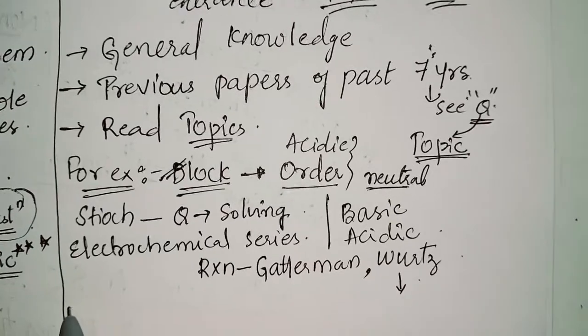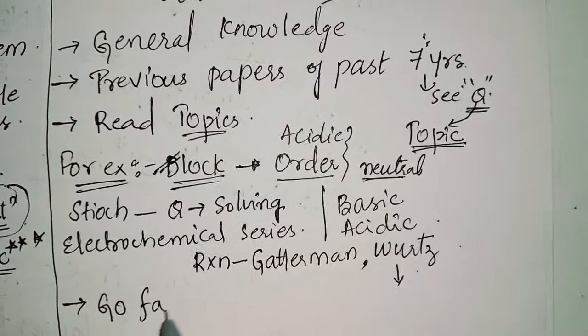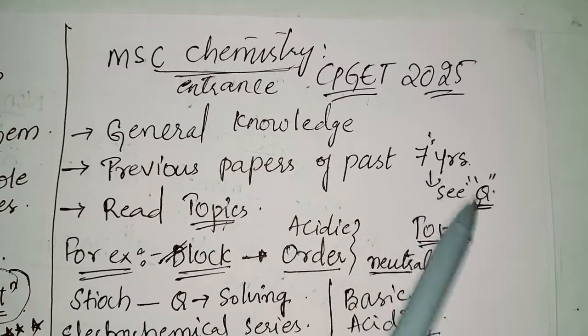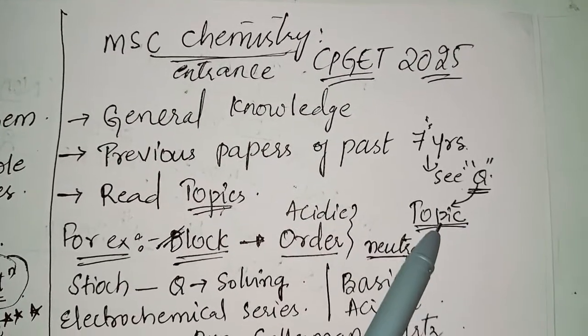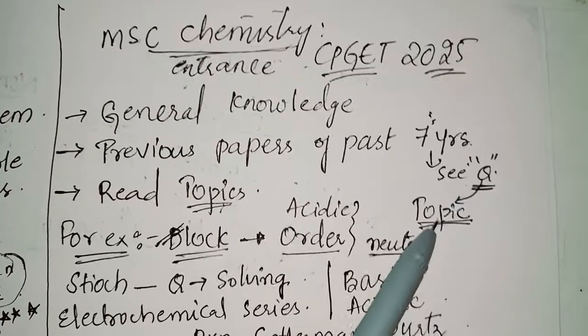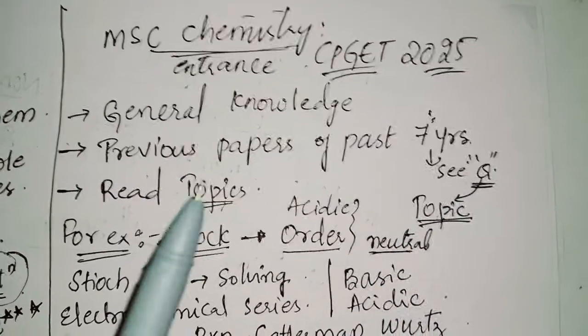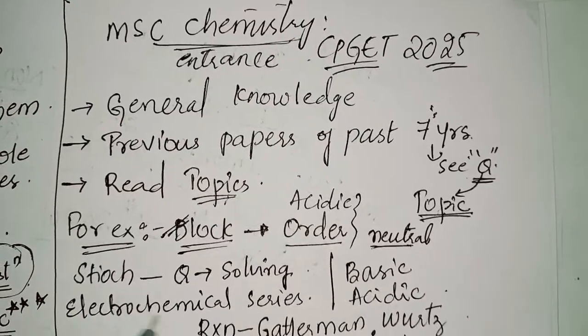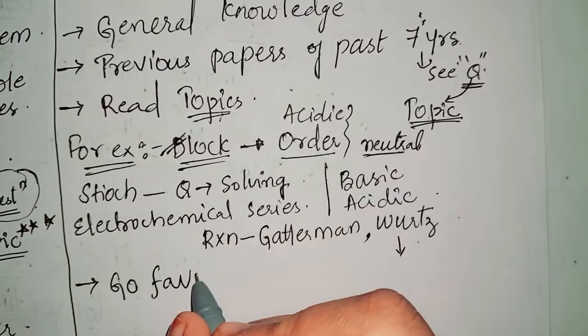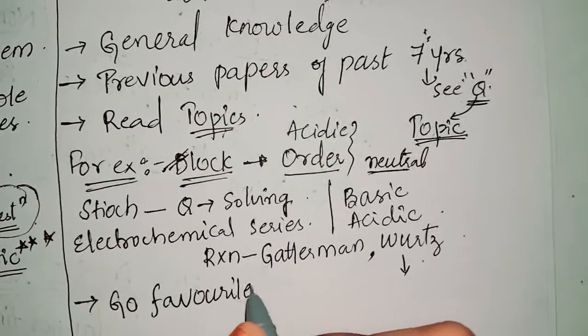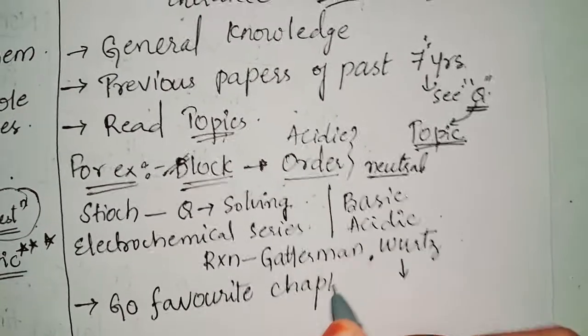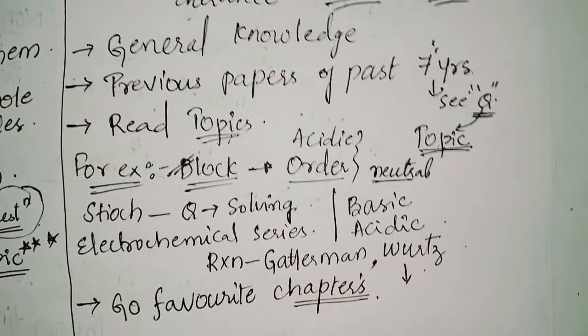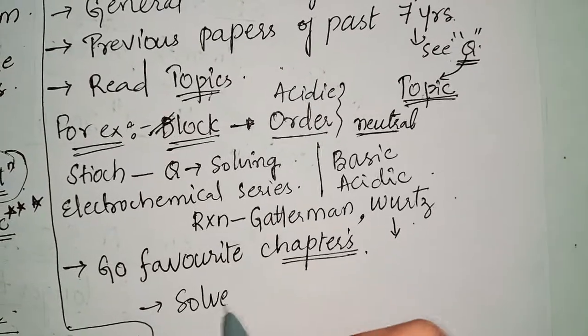And then last is go with a favorite chapter. After reading the previous papers, after seeing the previous papers, see the topics like what kind of questions they are repeating and topics of those questions, and read those topics only, particular topics first. And after that go with your favorite chapter and read your favorite chapters, okay? Whatever chapters your favorite, do it and solve MCQs.